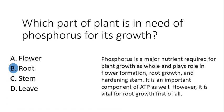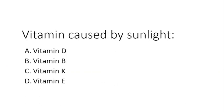Which part of a plant is in need of phosphorus for its growth? The correct answer from the given options is root. This is a bit tricky. Phosphorus is one of the macronutrients required for overall plant growth — it plays a role in flower formation, root growth, and hardening of the stem. It is also an important component of ATP, but it is vital for root growth first of all.